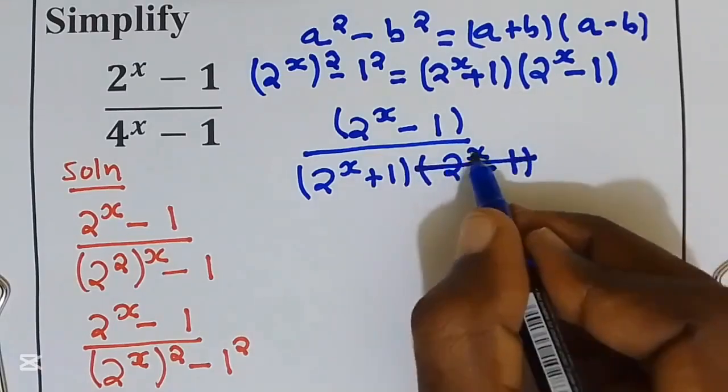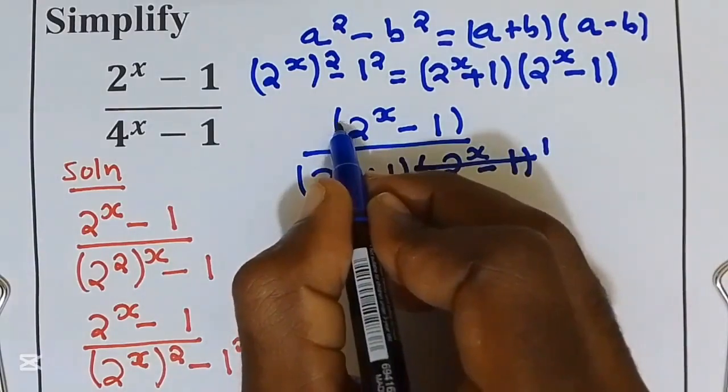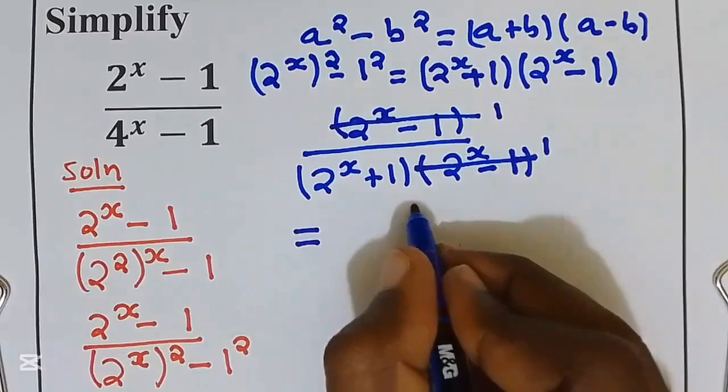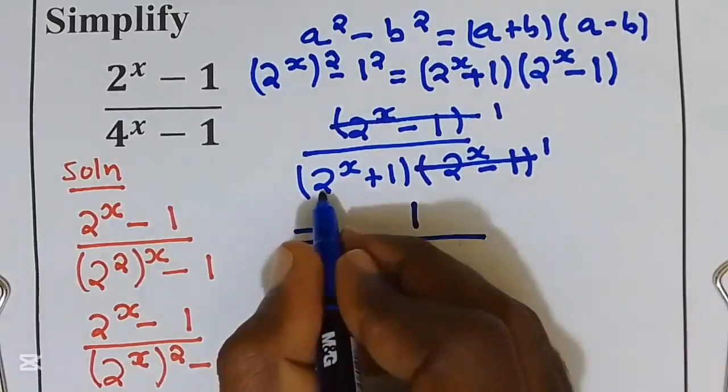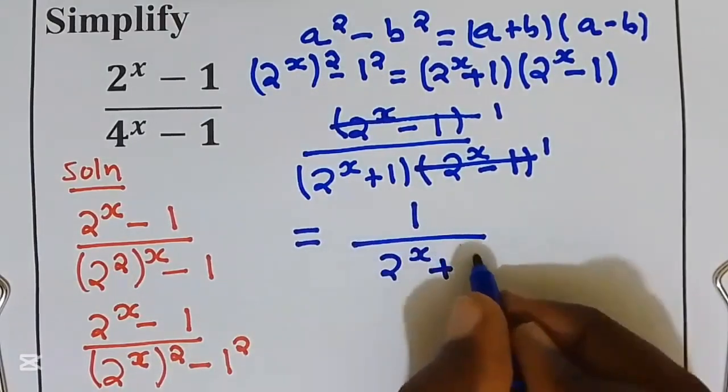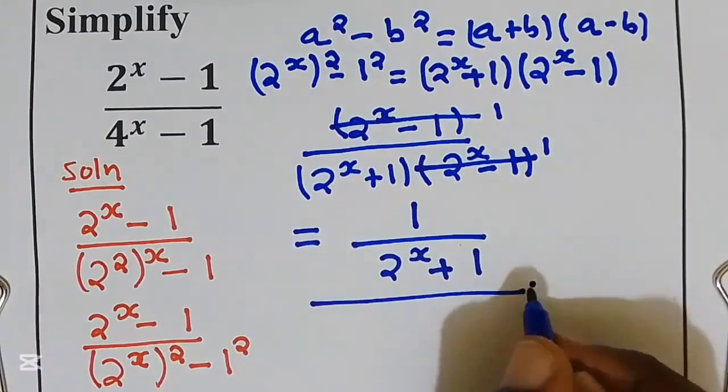We simplify by canceling 2^x - 1, which gives us 1 over 1. We remain with 1 over (2^x + 1). This is our most simplified answer.